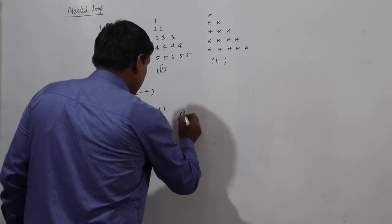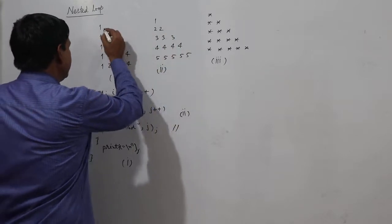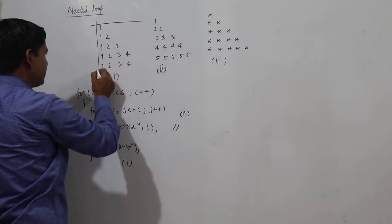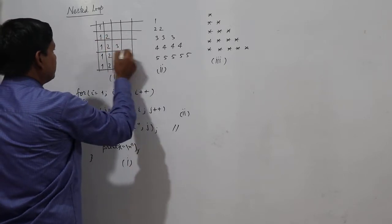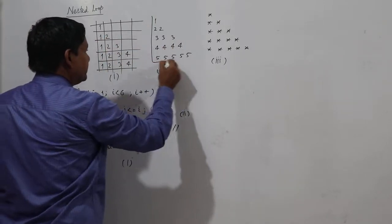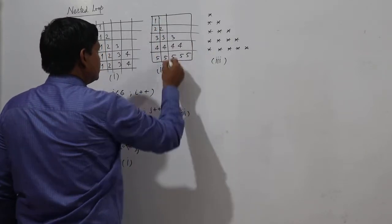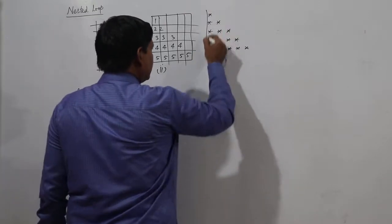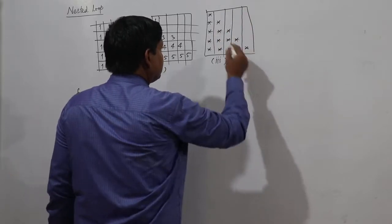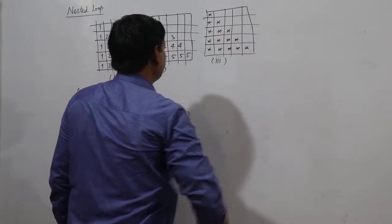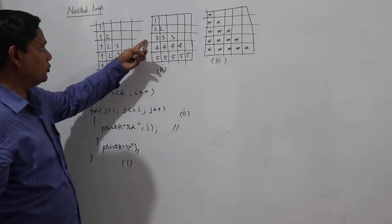For the first loop, in place of this print, I will be printing here: row number one — one is being printed. Row number two — two is being printed. It can be visualized in this way also. So what is printed: row number one, row number two, row number three — everything is the same.